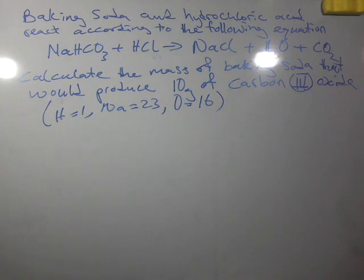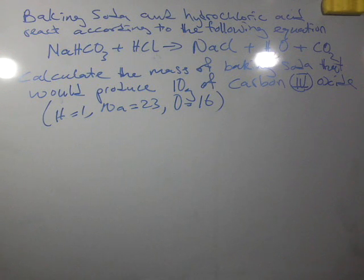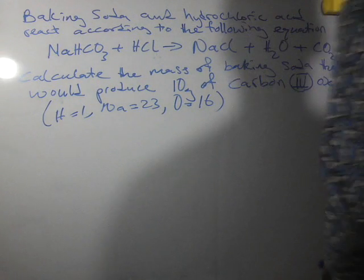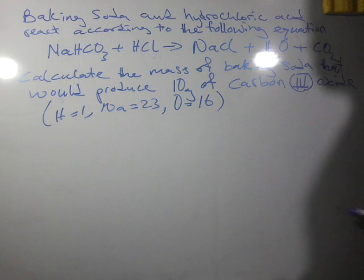We have a question on the board. It says baking powder and hydrochloric acid react according to the following equation: baking powder plus hydrochloric acid gives sodium chloride, water, and carbon dioxide. The question asks us to calculate the mass of baking powder — that is, sodium hydrogen carbonate — that will produce 10 grams of carbon dioxide.